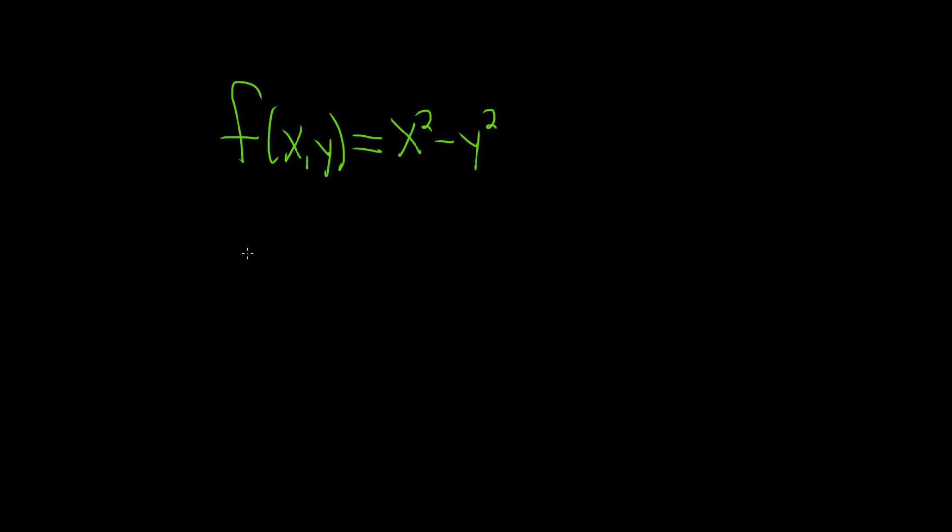In this problem we're given a function of two variables and we're asked if it's a harmonic function. A function is harmonic if it has a continuous second derivative and satisfies the following partial differential equation: fxx plus fyy equals zero.